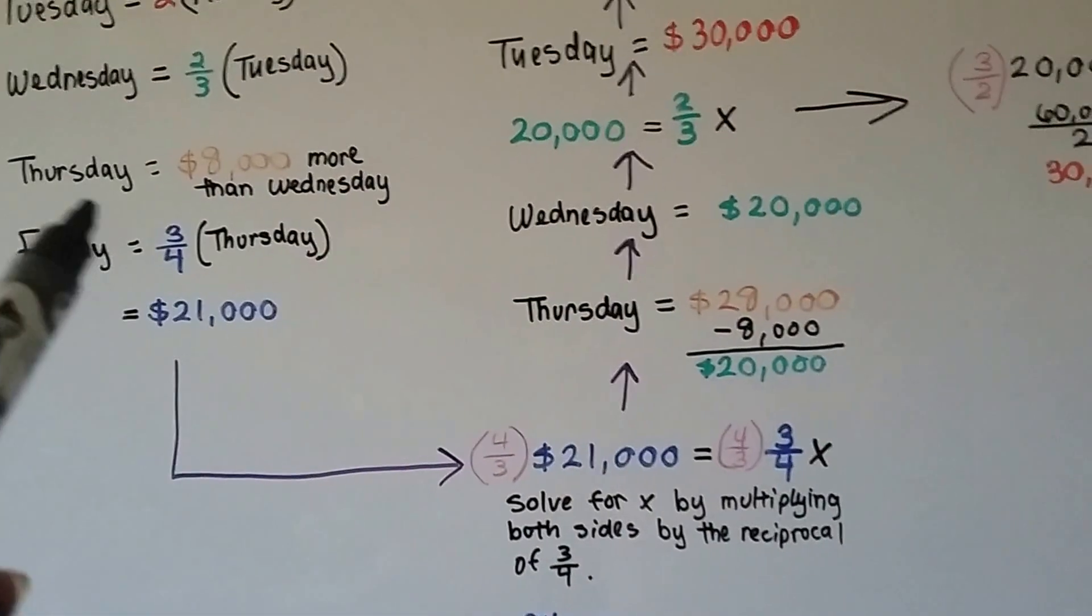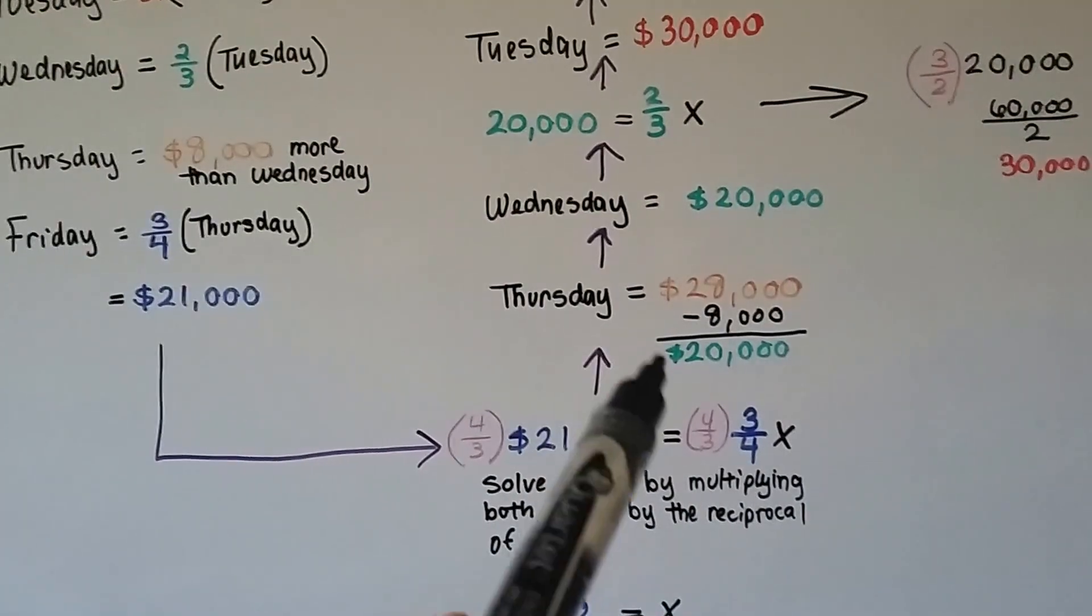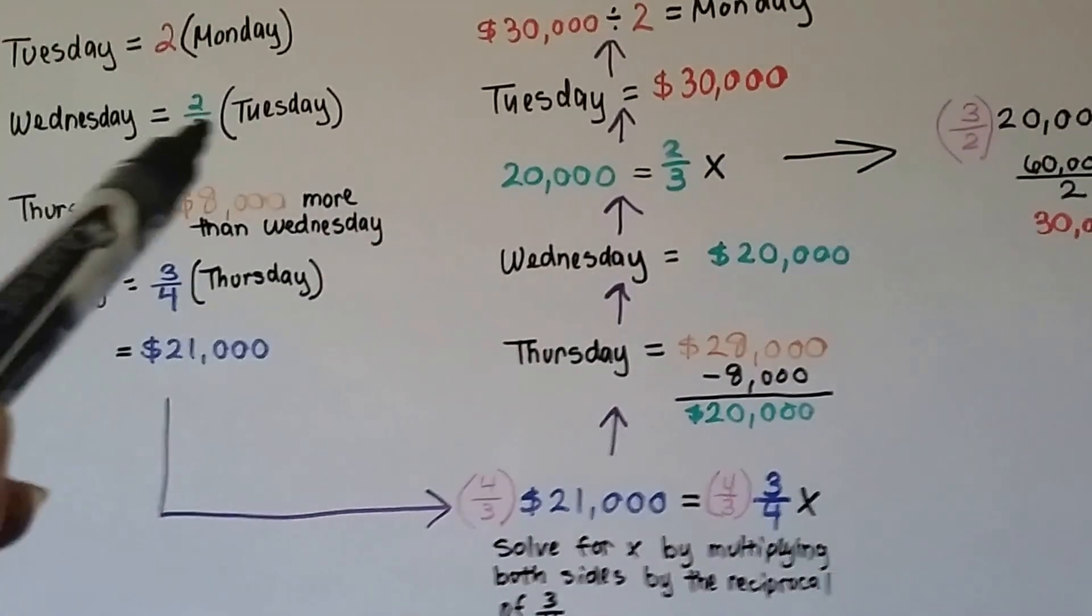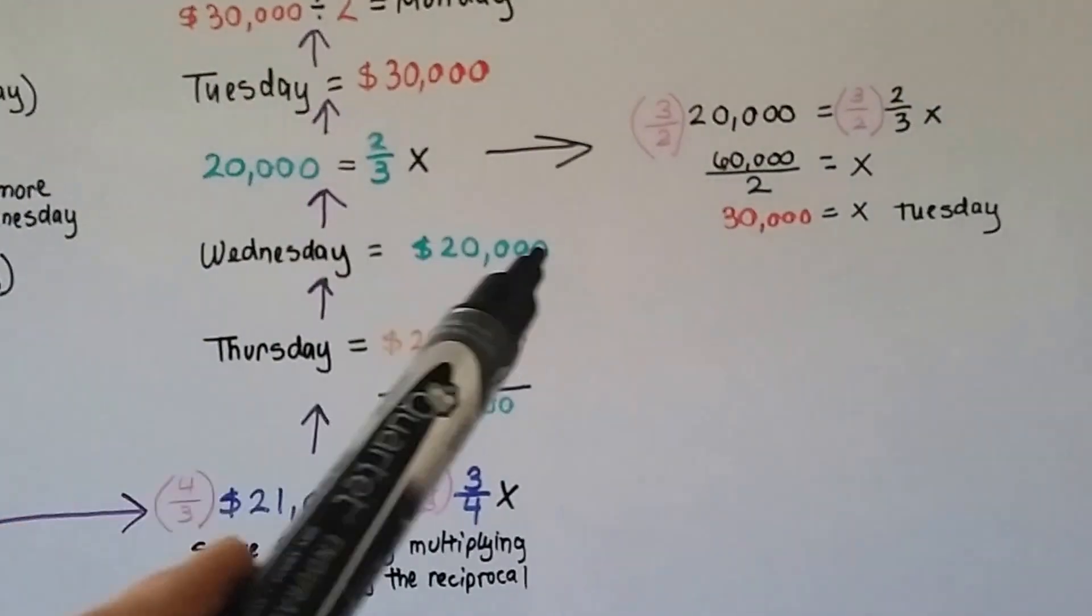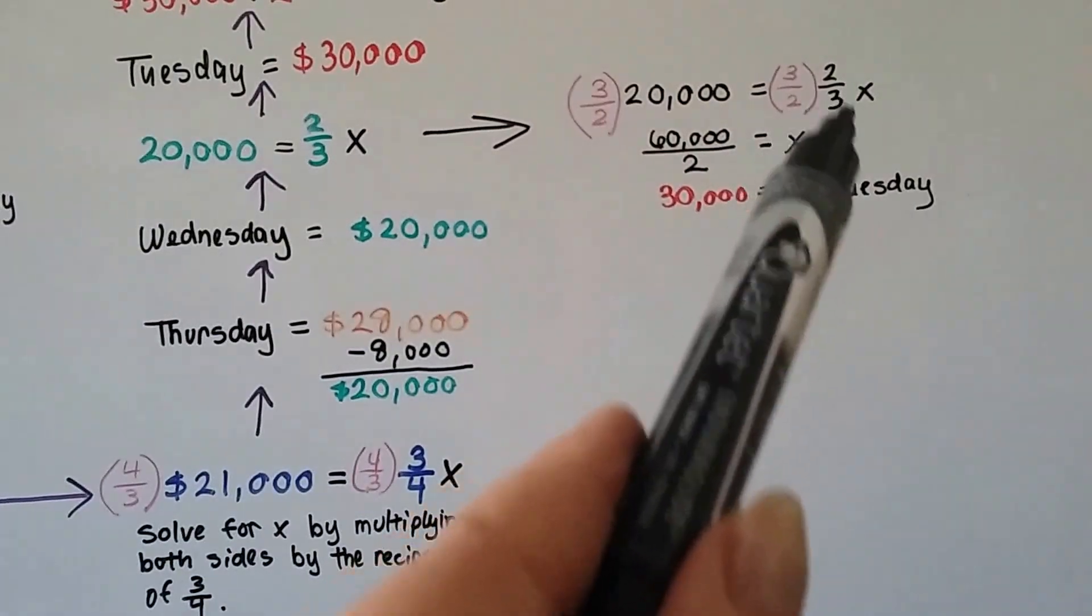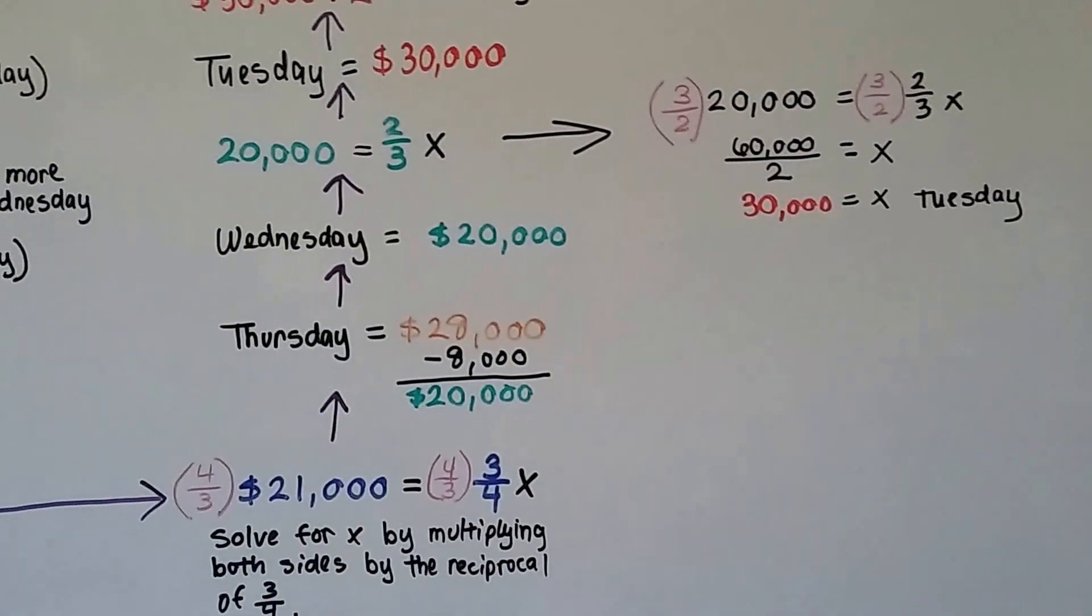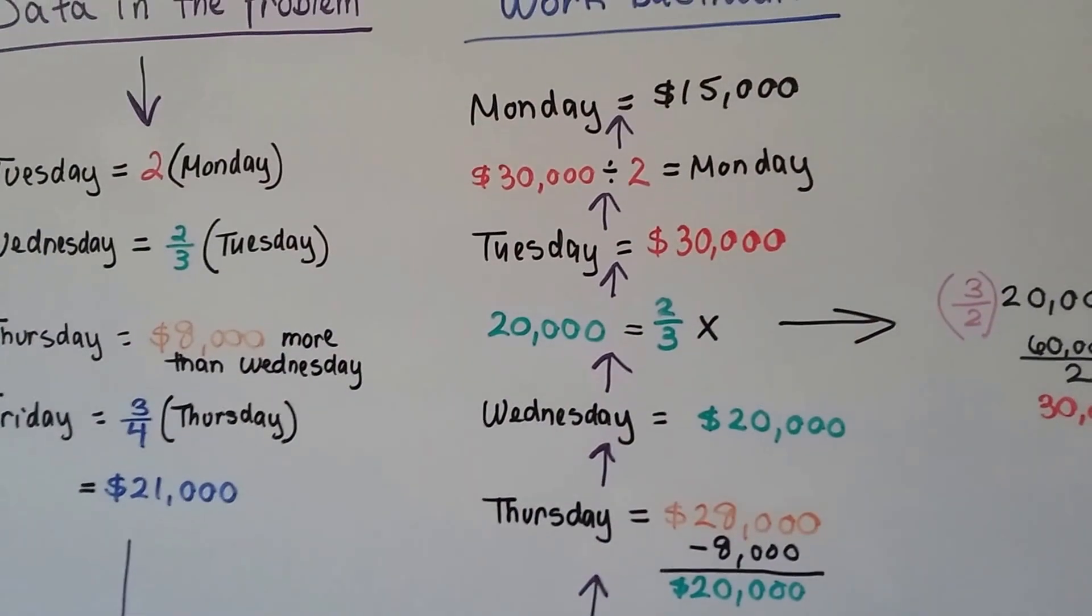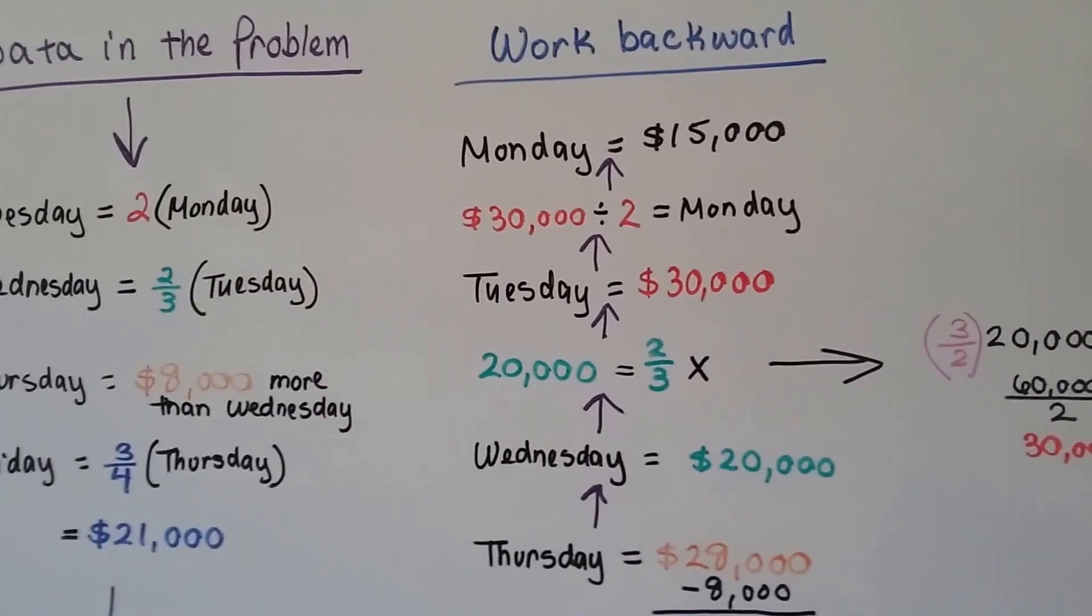Well, it also told us that Thursday was 8,000 more than Wednesday. So to find Wednesday, we just take that 8,000 away. We know Wednesday is 20,000. And it also told us that Wednesday was two-thirds of Tuesday. Well, if Wednesday is 20,000, 20,000 equals two-thirds x. We multiply both sides of the equation by the reciprocal of that two-thirds coefficient. We get 60,000 divided by two. That means 30,000 is Tuesday. And if 30,000 is Tuesday, which was twice as much as Monday, we just divide that 30,000 by two, and we know Monday was 15,000.